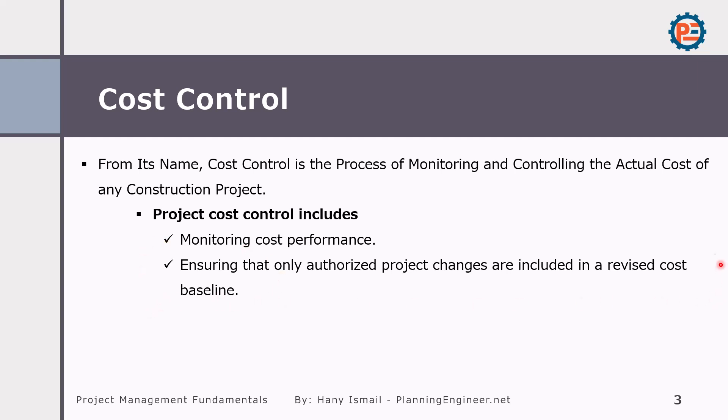Here you might find some project managers who are doing something called goal depleting — meaning giving to the client, from a contractor's point of view, more than the contract says. So if you are applying cost control, the project manager or whoever is responsible for the project cannot give more than what is already in the contract. Otherwise, we need to issue a change order for the contractor to execute additional works or even to change some specifications of the project.